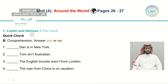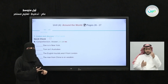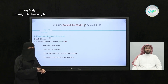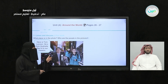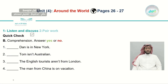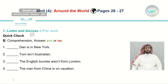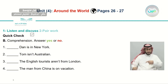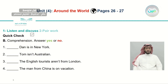So the first country was China, then Liverpool, then Australia. Let's now have a quick comprehension check. Letter P, comprehension — answer yes or no. Number one: Dan is in New York. Close your book and try to refresh your memory. Dan is in New York — is it yes or no?